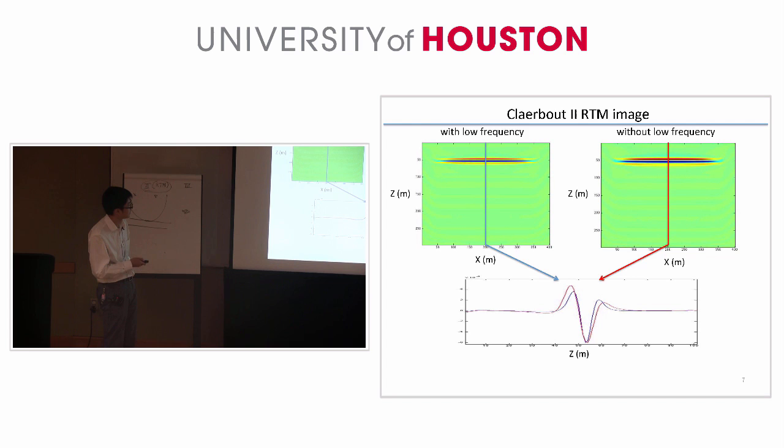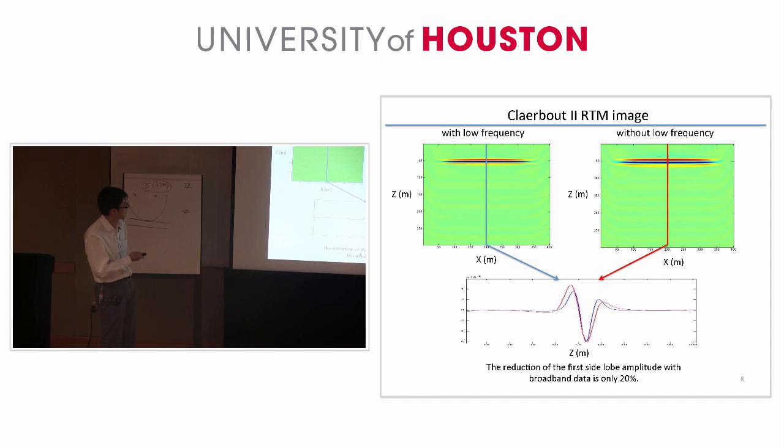We can plot one trace from this image and pull them together. We can see here the blue line is a broadband data image and the red line is a conventional data image. We can see the reduction of the first side lobe with broadband data is only 20% for CLIBO2.